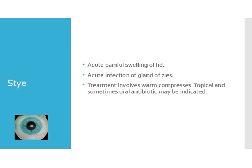A sty can also cause swelling of the lid. Chalazion is generally a chronic and painless condition unless it gets infected, whereas a sty is an acute condition — it is an acute infection of the glands of Zeis, which are sweat glands. In a patient with a sty, you can notice an infection at the hair follicle, whereas in chalazion the lashes are normal. Treatment involves warm compresses, topical antibiotics, and sometimes if there is significant soft tissue involvement around the lid, oral antibiotics may be needed.